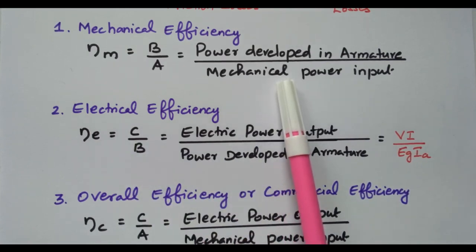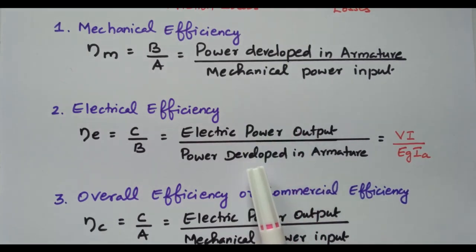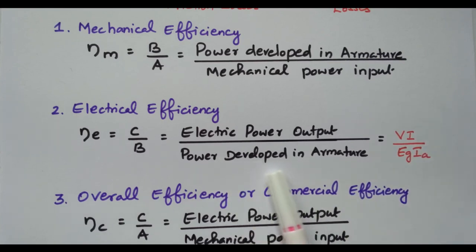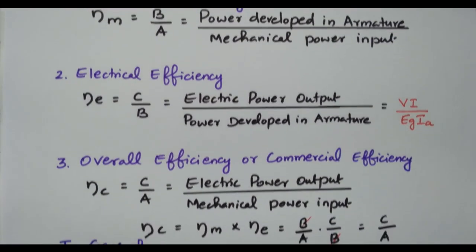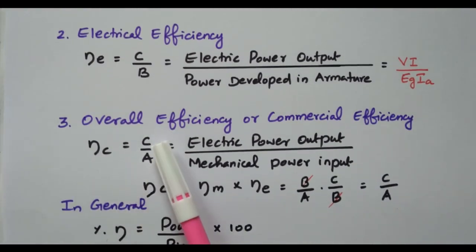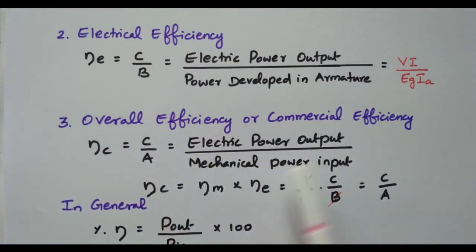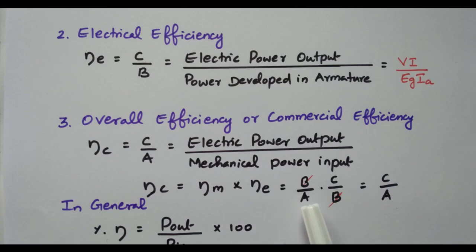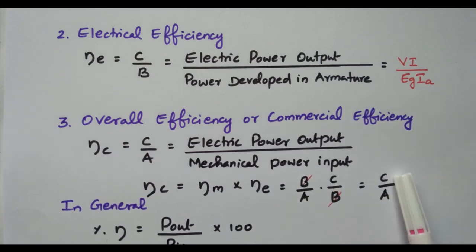So: the first input is mechanical power input; the output of that is power developed in the armature. Power developed in the armature — the next output is electrical power output, which is V × I, the voltage and current at the output terminal of the generator. Power developed inside is EG × IA. By combining these two, we get the overall or commercial efficiency — C divided by A, the third stage divided by the first stage. Since mechanical efficiency is B/A and electrical efficiency is C/B, the B cancels out, giving C/A. So: commercial efficiency = mechanical efficiency × electrical efficiency (Nm × Ne).